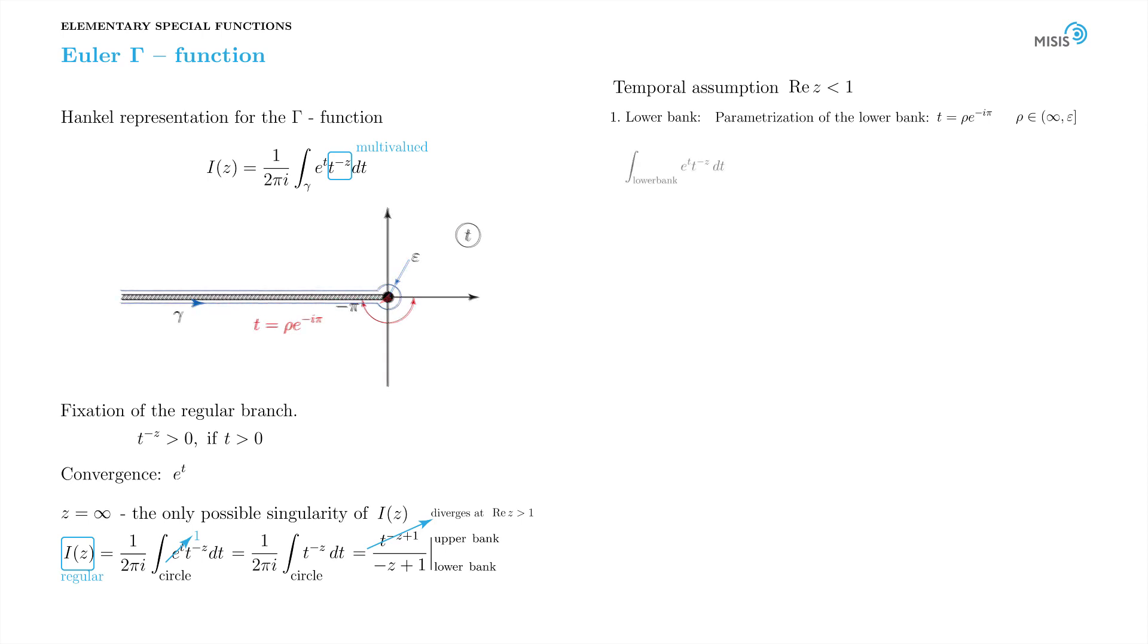So we plug in our parameterization to the lower bank part of the integral. And it is transformed like this. Now, if real part of z is smaller than 1, the integral converges at the upper limit and we can take the limit epsilon tending to zero.